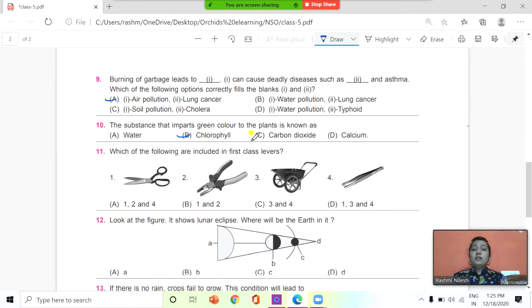11. Which of the following are included in first class levers? Look at the options here: scissors, pliers, wheelbarrow, bottle opener. These are all two pictures. You need to watch it carefully. Which of the following are included in first class levers? Option A: 1, 2, 4. B: 1 and 2. C: 3 and 4. And D: 1, 3, and 4. And the answer is B, scissors and pliers. This is a first class lever.